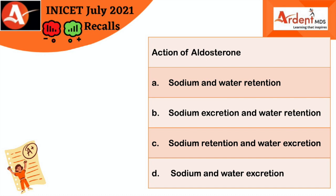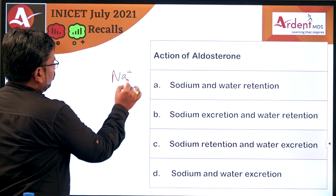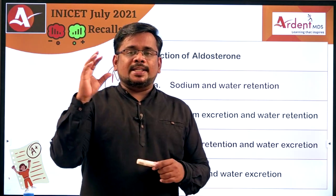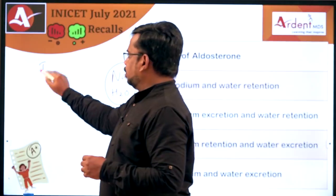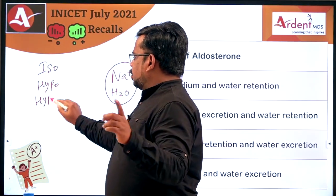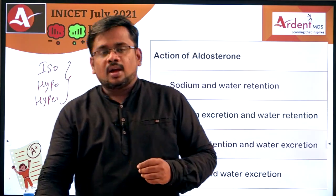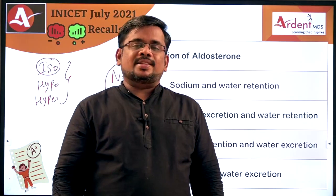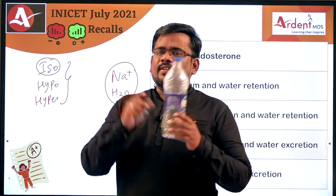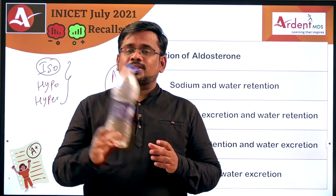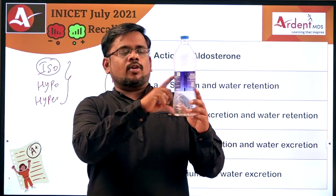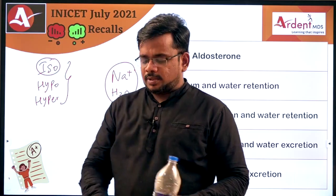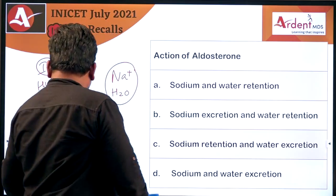Aldosterone, also called mineralocorticoids, causes reabsorption of sodium, and along with sodium, water is also reabsorbed. They may ask what will be the tonicity of the plasma — whether it is isotonic, hypotonic, or hypertonic. The answer is isotonic, because it causes reabsorption of both sodium and water. For example, if you take one liter of water and add one spoon of salt, it is hypotonic; but if you add 500ml water and 500ml salt, it is isotonic — that is what happens here.